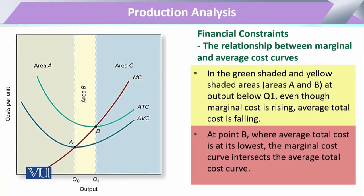Coming to this diagram, we see that here we have the average variable cost, the average total cost, and the marginal cost curve. There are two points which show that at one point the marginal cost curve is just equal to the average total cost. These two points in some graphs may be very close to each other, but in certain cases we can still see a certain difference, shown here through the shaded green and yellow areas.